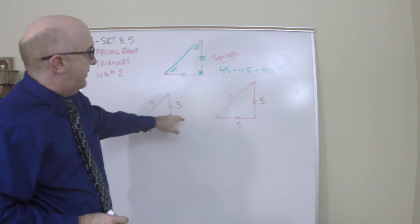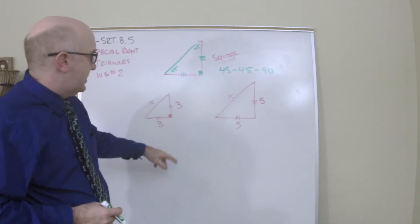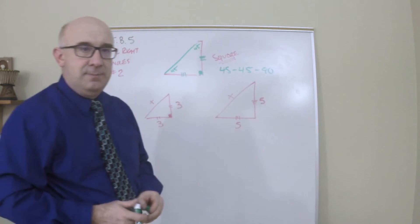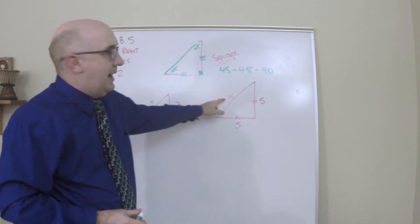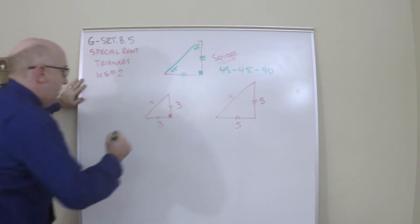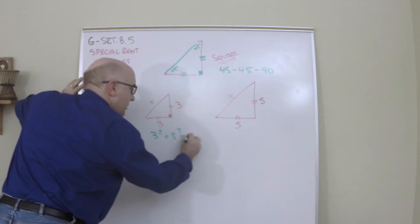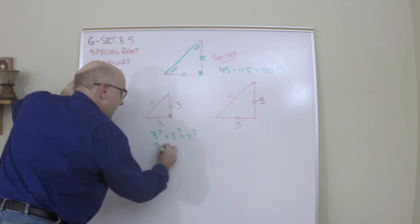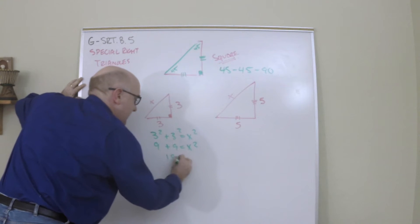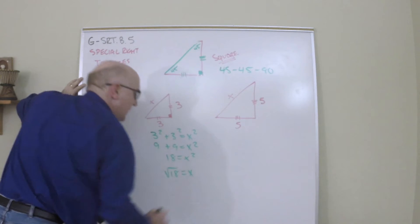In this type of special right triangle — the 45-45-90 or right isosceles — you're always going to get two sides that are equal to each other. I'm interested in the length of the hypotenuse, so I'm going to do some quick math. That gives us 3 squared plus 3 squared equals x squared. 9 and 9 equals x squared. 18 equals x squared, and the square root of 18 equals x.